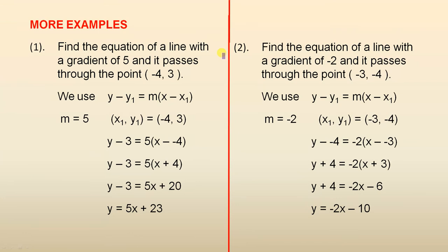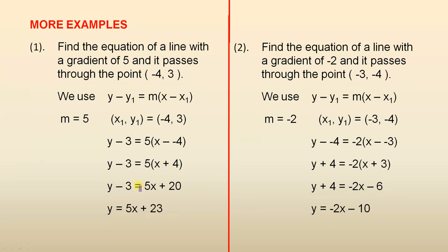Find the equation of a line with a gradient of five and it passes through the point minus four three. Here m equals five and x one y one is minus four three. Substituting into the formula: y minus three equals five outside of x minus minus four, which gives y minus three equals five outside of x plus four, because the two minuses give a plus.